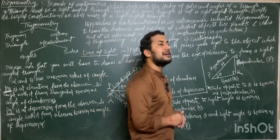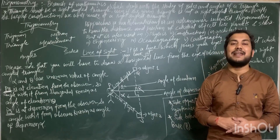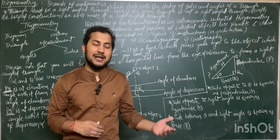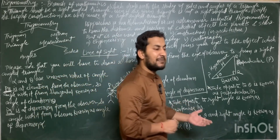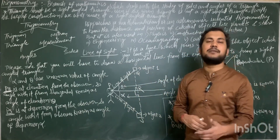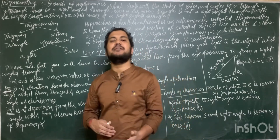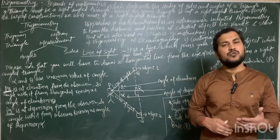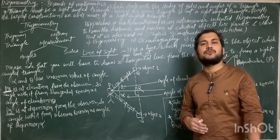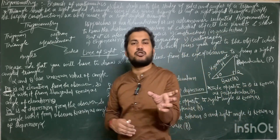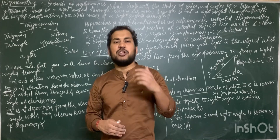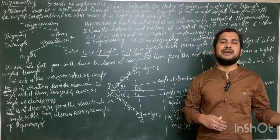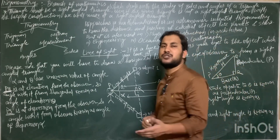Hipparchus was a mathematician and astronomer who invented trigonometry to measure the distance between celestial objects, such as the distance between planets and the position of stars. But later, trigonometry is also used in physics, engineering, construction, architecture, oceanography, and cartography. In oceans we use trigonometry to measure the depth of the sea, and in maps we use trigonometry to locate each location.